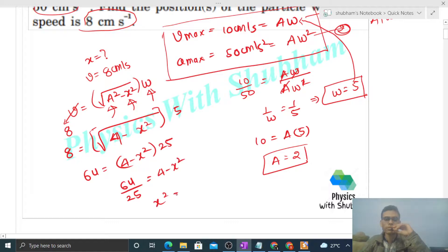So x square will be 4 minus 64 by 25. So this will be 36 by 25, that is your x square. So x will be square root of 36 by 25, and plus minus, so that will be 6 by 5 plus minus.